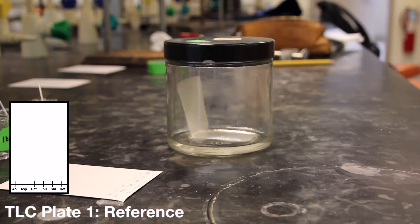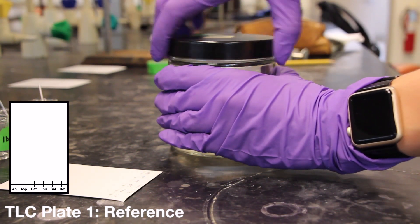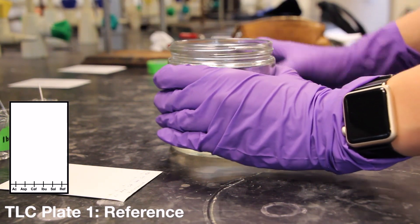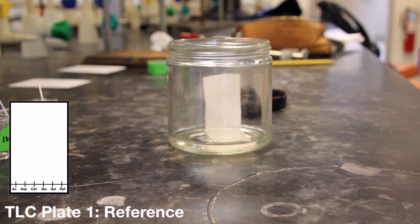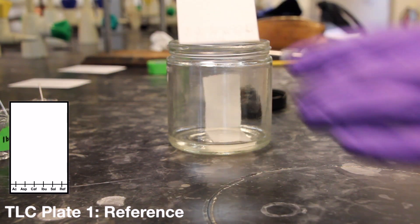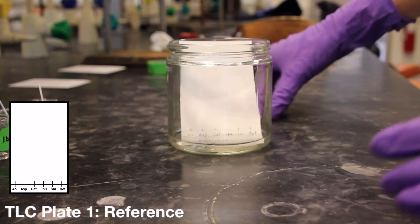Once your first plate has been spotted, place it into the jar with the spotted edge at the bottom. This plate should be placed in the jar with the coated side facing away from the solvent saturation strip. Make sure that the entire bottom edge of the plate is submerged in the solvent, but the line of applied samples is above the solvent level in the bottom of the jar.